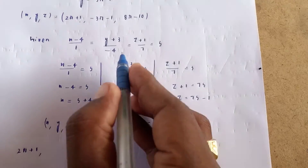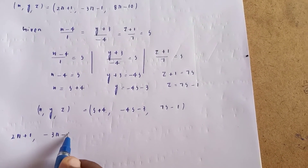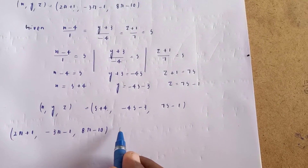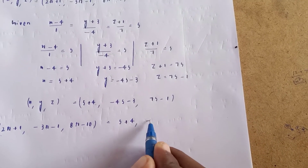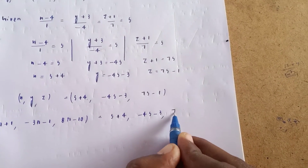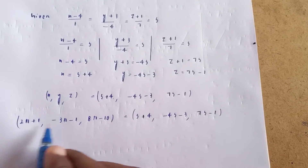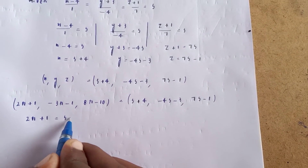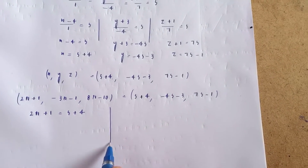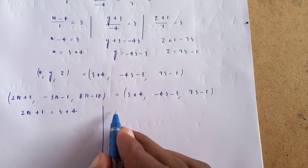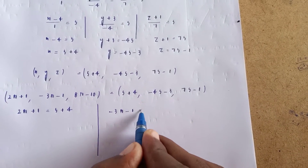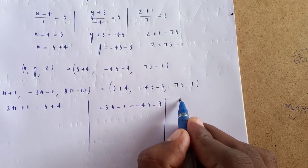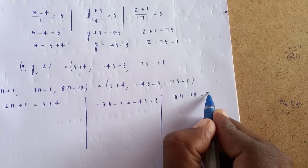The point on Line 1 is (2r+1, −3r−1, 8r−10) and on Line 2 is (s+4, −4s−3, 7s−1). Setting them equal: 2r+1 = s+4 (first terms equal), and −3r−1 = −4s−3 (second terms equal).